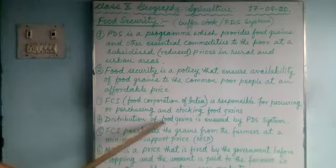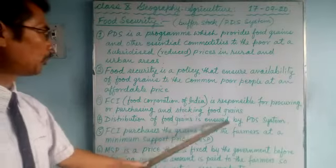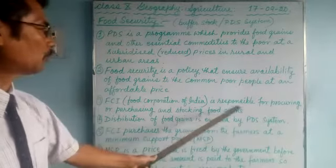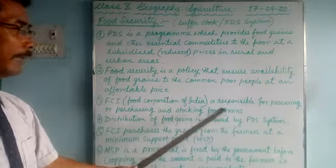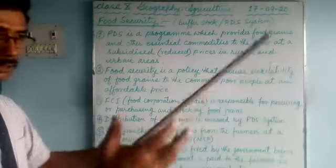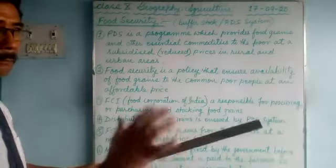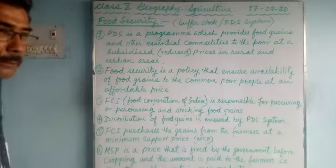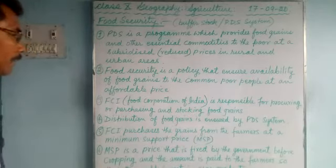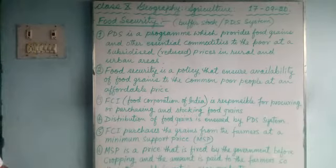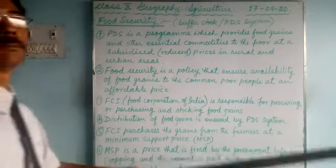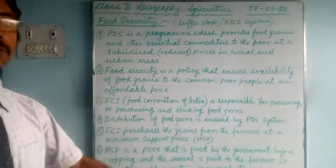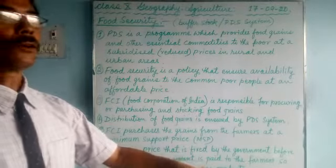Distribution of food grains is ensured by the PDS system. You can see the two components: FCI purchases, stores, and maintains the stock, while the PDS system handles the distribution of food grains, especially to the poor and common people.